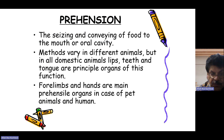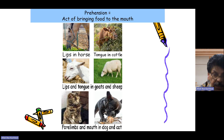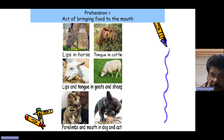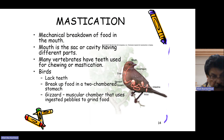Prehension is the seizing and conveying of food to the mouth or oral cavity. The method varies in different animals, but in all domestic animals, lips, teeth, and tongue are the principal organs of this function. Forelimbs and hands are the main prehensile organs in pet animals and humans. Horses bring food into the mouth using the lips, cattle use the tongue, goats and sheep use both lips and tongue, and dogs use the forelimbs and mouth to bring food in.